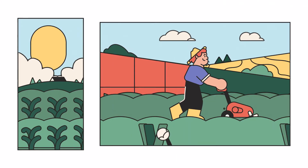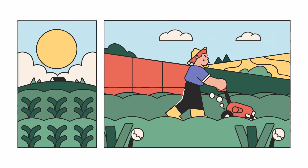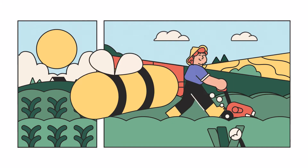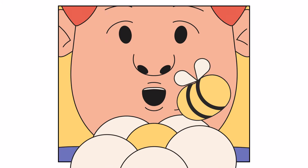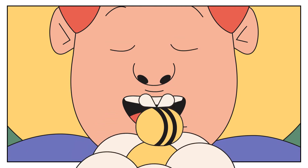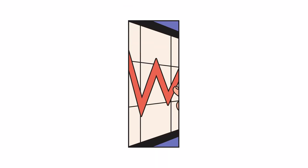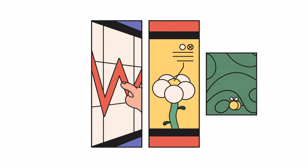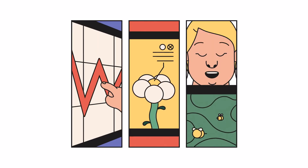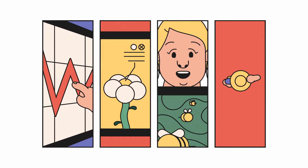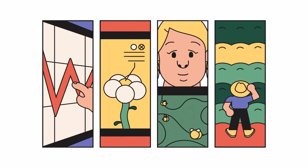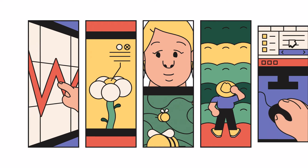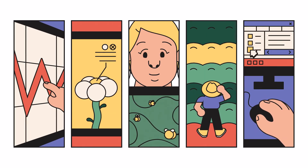Crop productivity can be greatly increased by improving wild pollinators' numbers and access, thus ensuring a stable food supply with no additional environmental harm. Scientists recommend monitoring the abundance and distribution of wild pollinators in order to know whether pollination services will be sufficient. However, many farmers often struggle putting this into practice as they may lack access to simple and accessible monitoring tools.